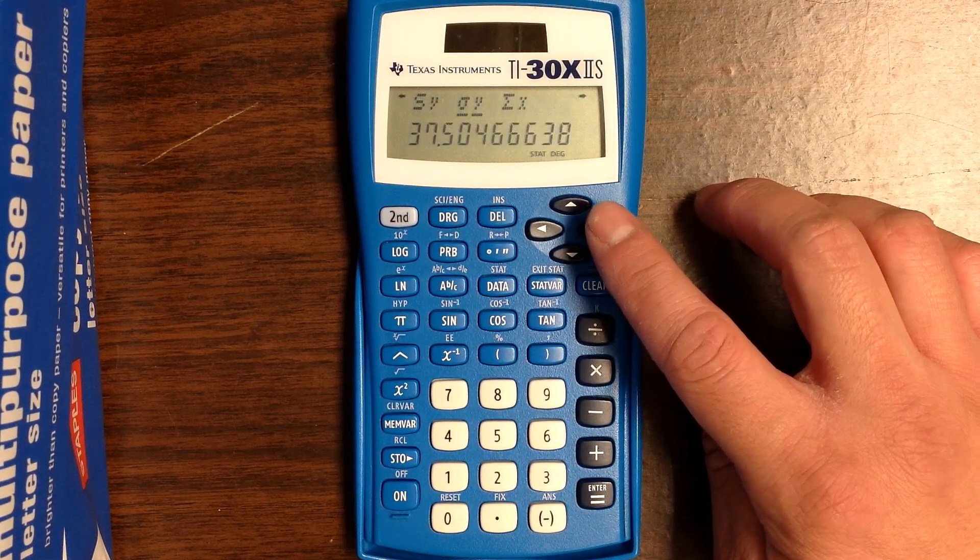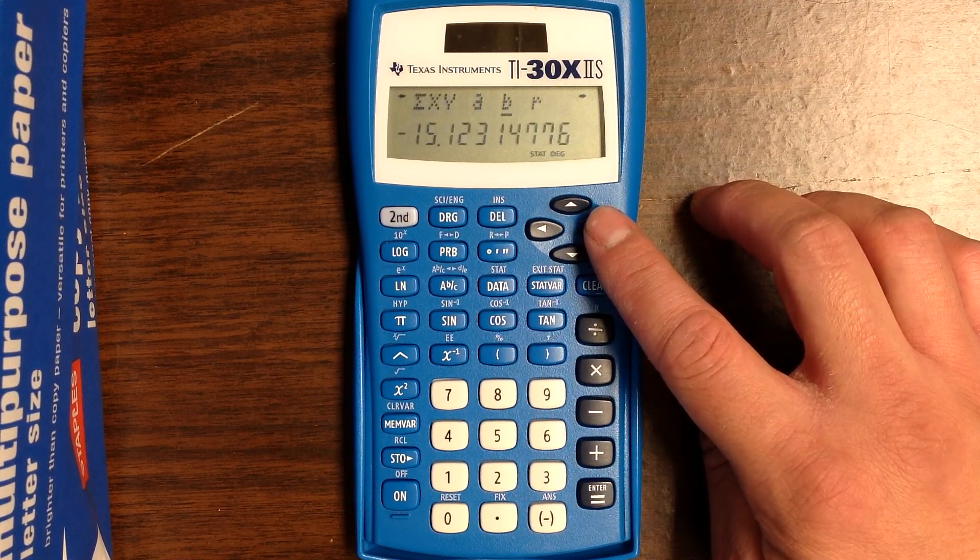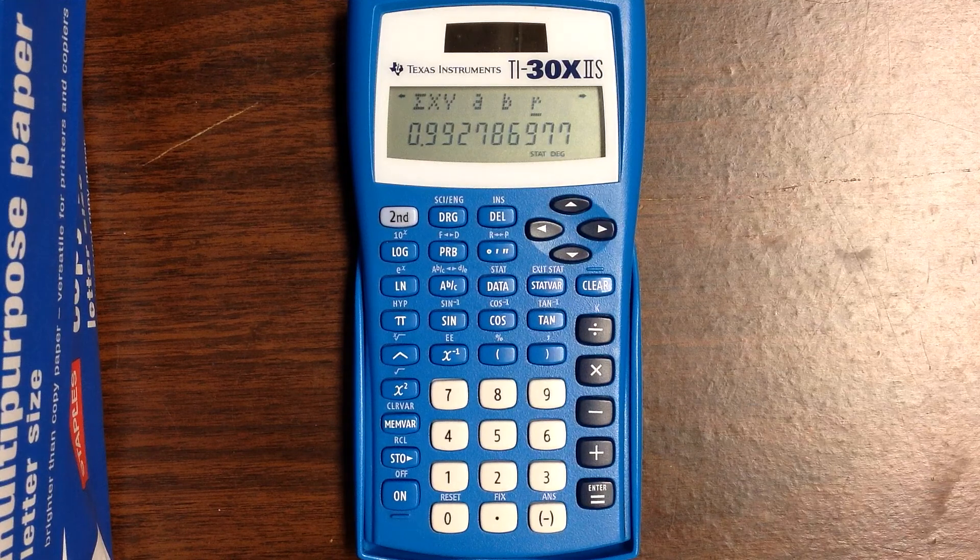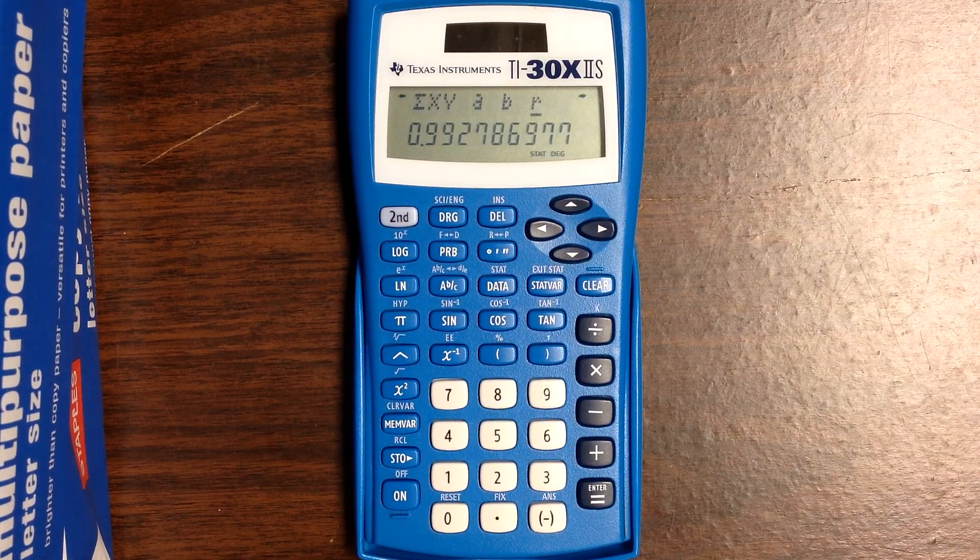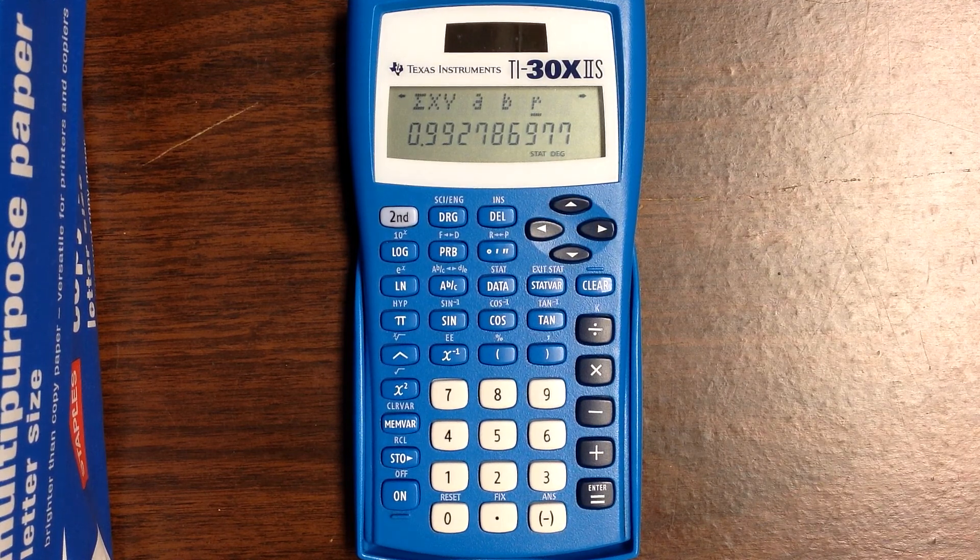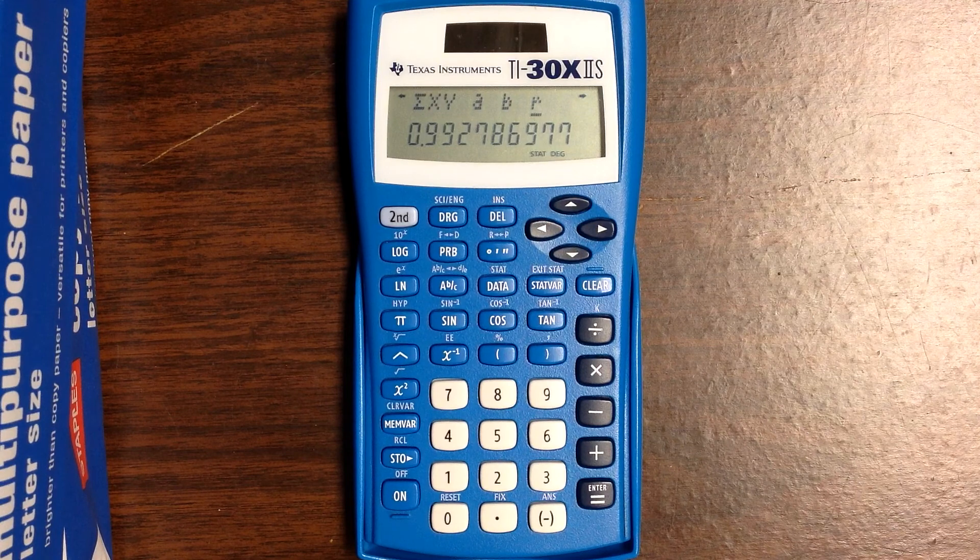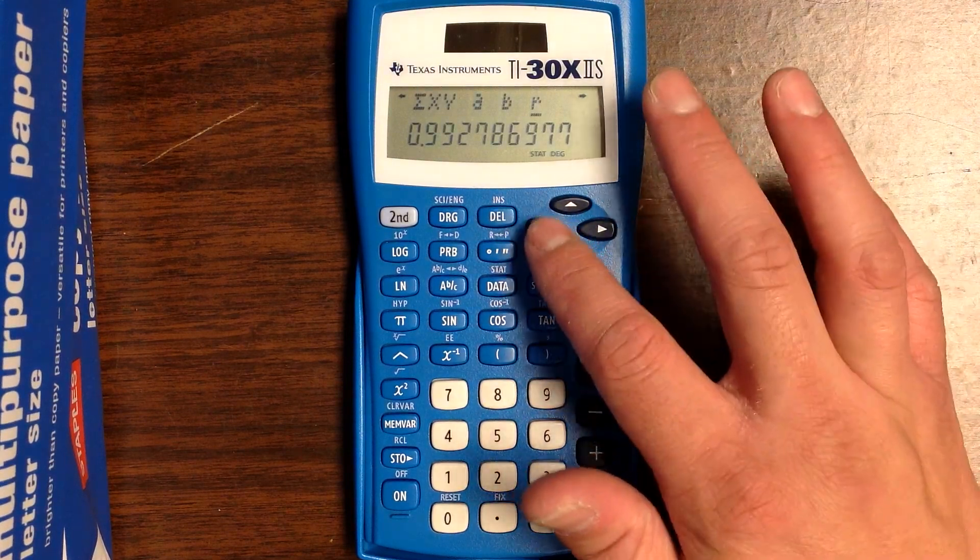Sigma Y is the standard deviation of Y that we'll be using. We keep scrolling ahead and now we see A, B, and R. R refers to the correlation coefficient. The correlation coefficient R equals 0.993 here, which means there's a very strong positive relationship between VCR households and millions of VHS tapes sold.